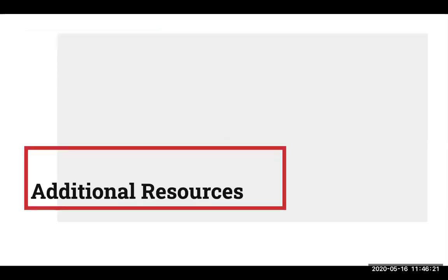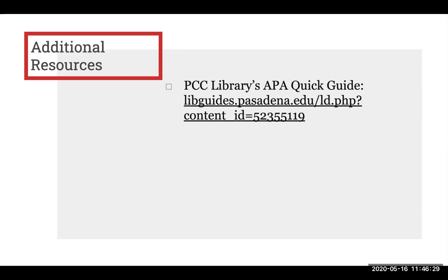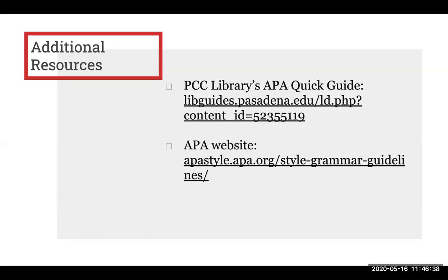Last but not least, let's review a few resources for APA style should you want to learn more. First is PCC Library's APA Quick Guide — a brief two-page guide with common reference formats and examples. Also helpful is the actual APA website. The APA has examples of reference formats, in-text citations, how to format your paper, and even sample research papers written in APA style.